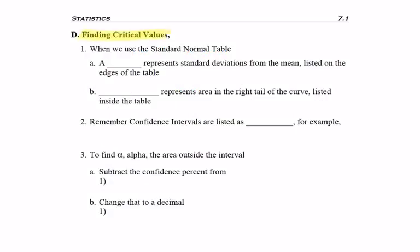So now we're going to talk about finding critical values. Critical values are written as Z α/2. So Z is a z-score, and the subscript on the right-hand tail is α/2. Now with z-scores, remember we always use the standard normal table. When it comes to a table, we want to know that a z-score represents standard deviations from the mean, and don't forget z-scores are on the edge of the table.